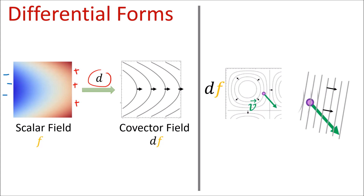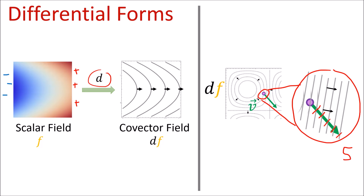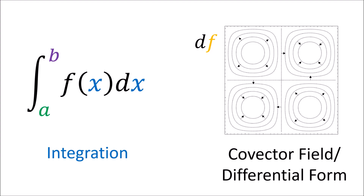This covector field df can behave like a function that acts on vectors. If we want to know how df acts on a vector v, we just zoom in on the covector at that point and count how many lines the vector pierces to get the output. So this interpretation of the d operator gives us covector fields, which are also called differential forms — but how does this relate back to the dx that we see in integrals that denotes an infinitesimally small change in the x variable?